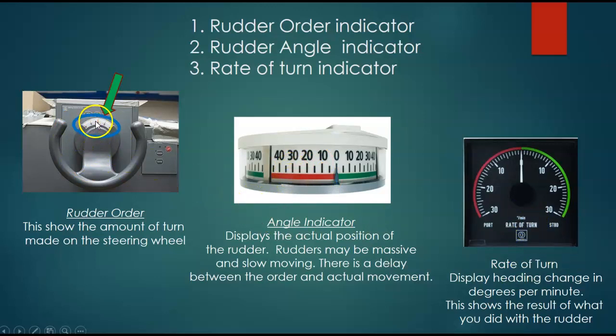The rudder order indicator is directly on the steering wheel. When the helmsman turns the steering wheel, right there you'll see it. As soon as you turn that, this is showing you where you have turned the wheel — what you are asking of the machinery, the steering gear in the steering gear room of the vessel. It's instantaneous. It takes a little bit of time for the rudder — generally rudders are pretty big things — so it takes a while for them to move.